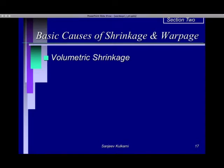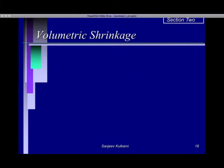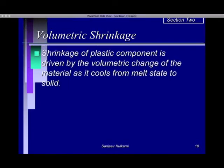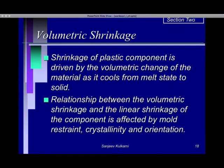The basic causes of shrinkage and warpage are: volumetric shrinkage, crystallinity, stress relaxation, and orientation. Shrinkage of the plastic component is driven by the volumetric change of the material as it cools from melt state to solid state. The relationship between volumetric shrinkage and linear shrinkage of the component is affected by the mold constraints, crystallinity, and orientation.